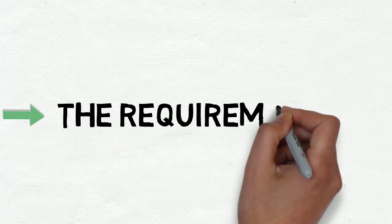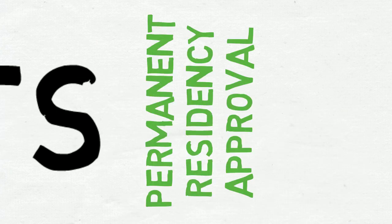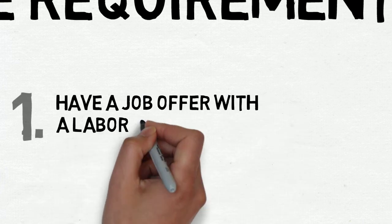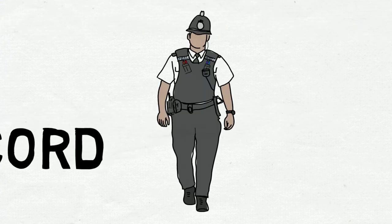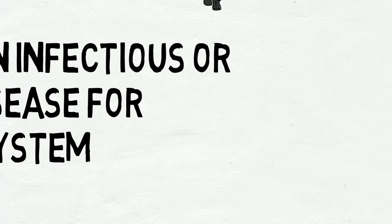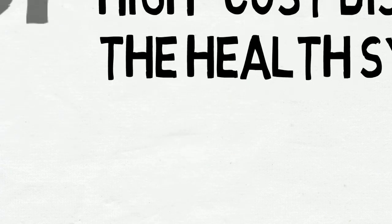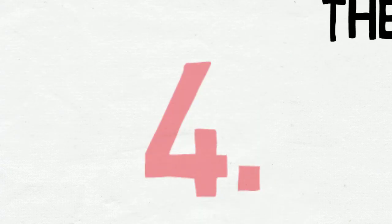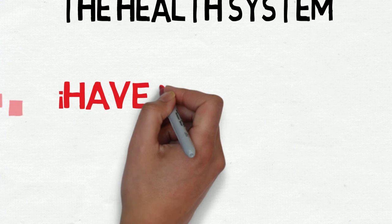What are the requirements for permanent residency approval? 1. To have a job offer with a labor certificate approval. 2. No criminal record. 3. Not having an infectious or high-cost disease for the health system. And last but not least, to have the desire to work.